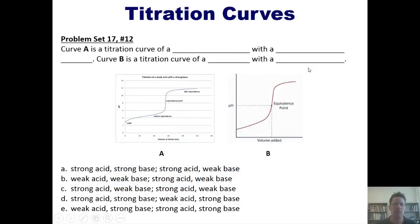That takes us to a great question. The reason I ask this question is because I've seen questions like this on standardized exams. Curve A is a titration curve of a blank with a blank. Curve B is a titration curve of a blank with a blank. Now I invite you to use the information that I just presented. Pause this video and then see if you can answer this on your own. Then if you like, you can hit play and I will answer it for you.